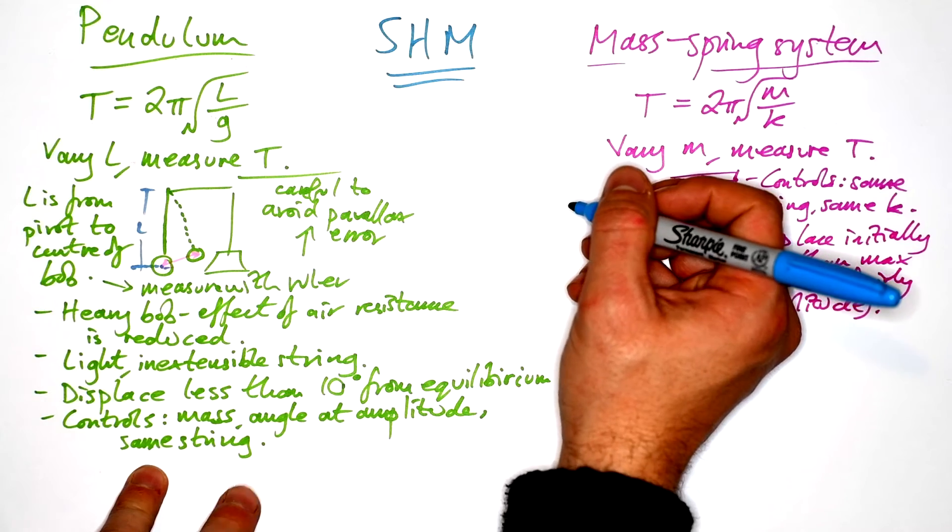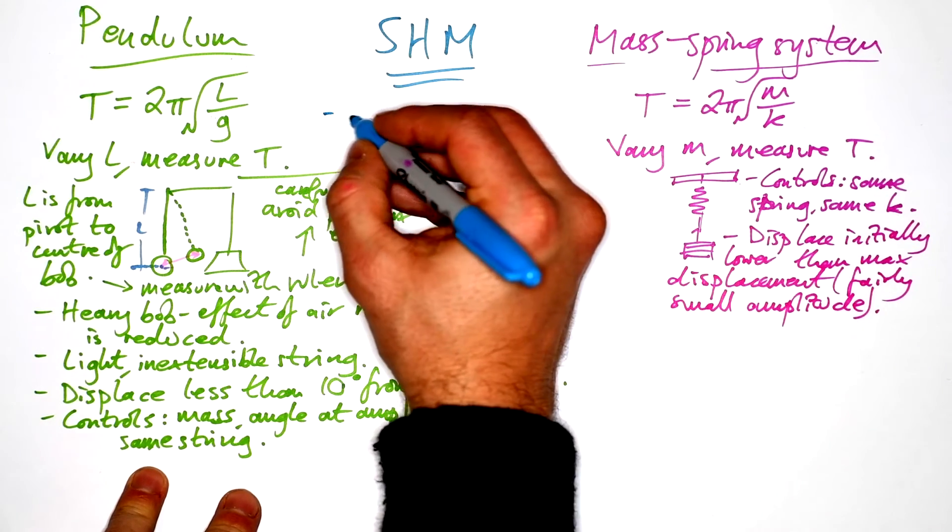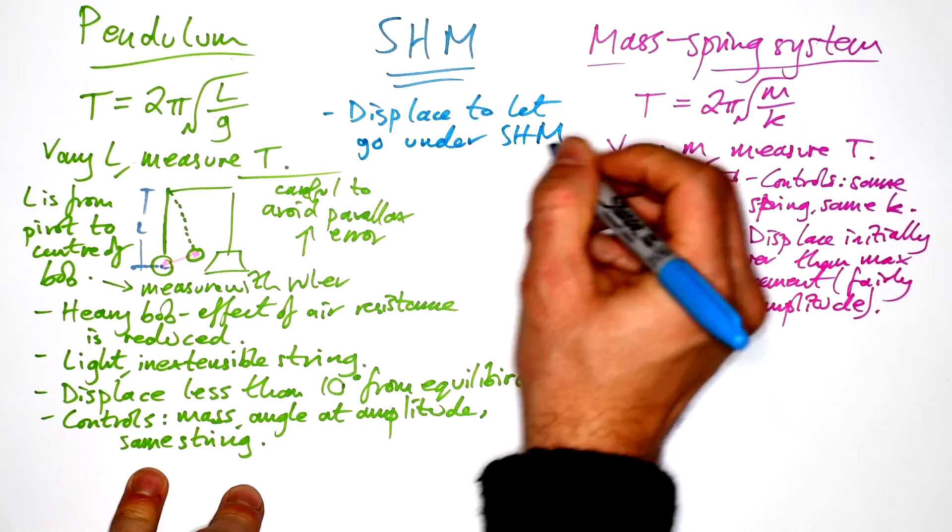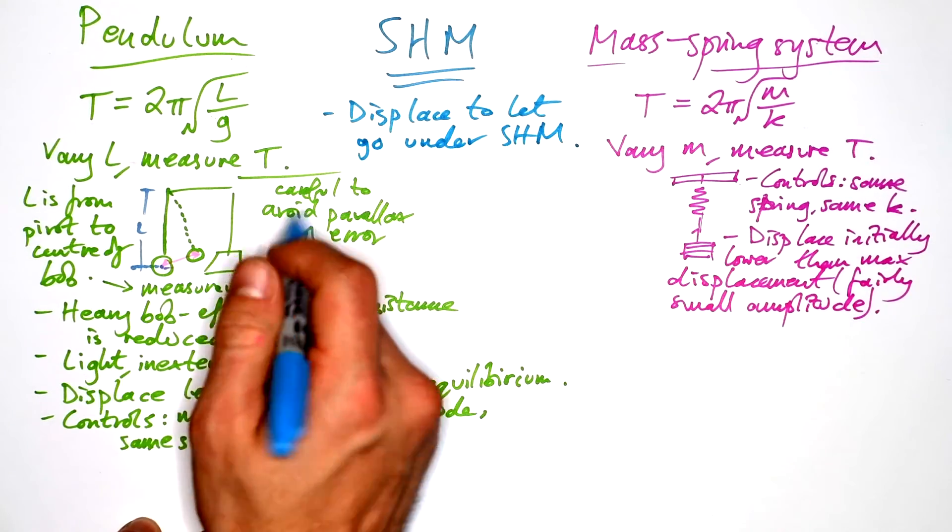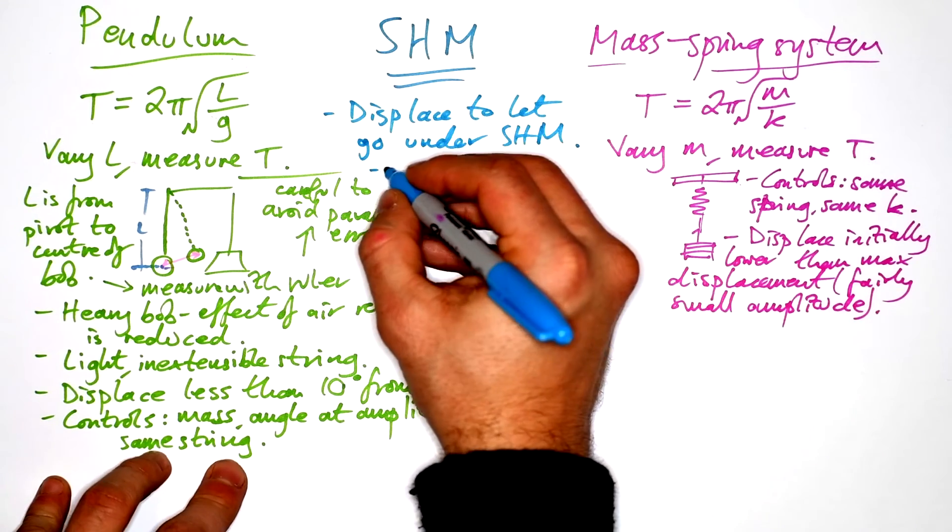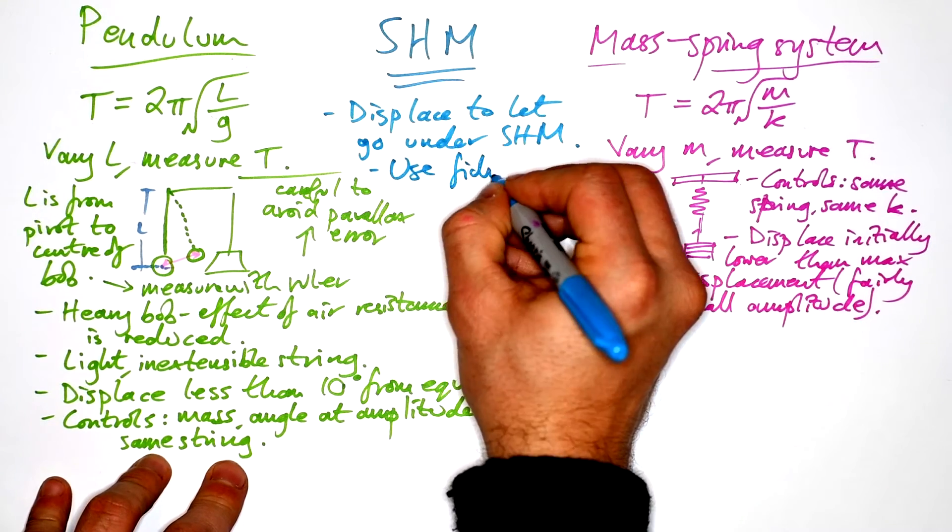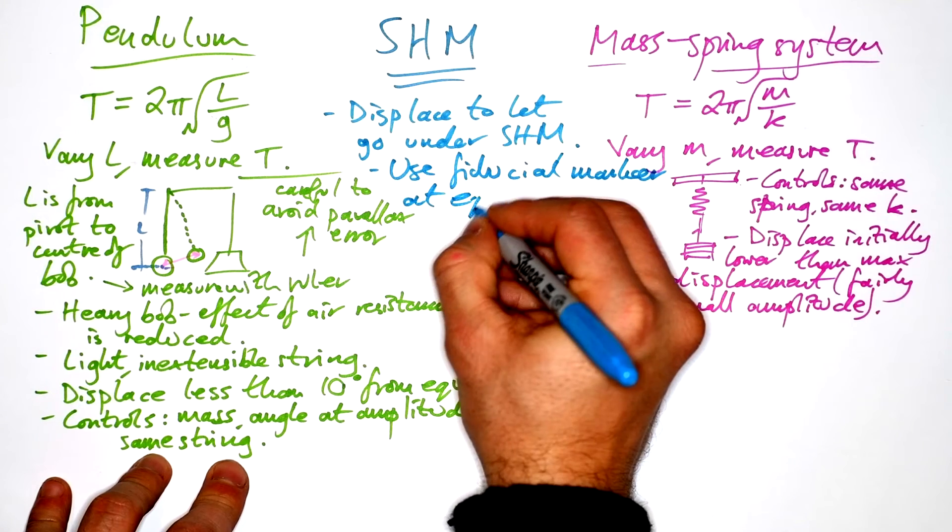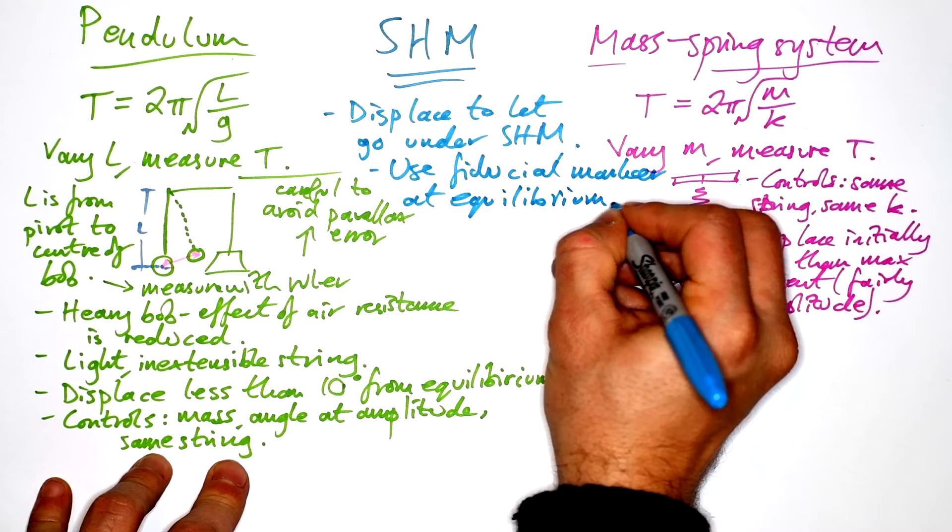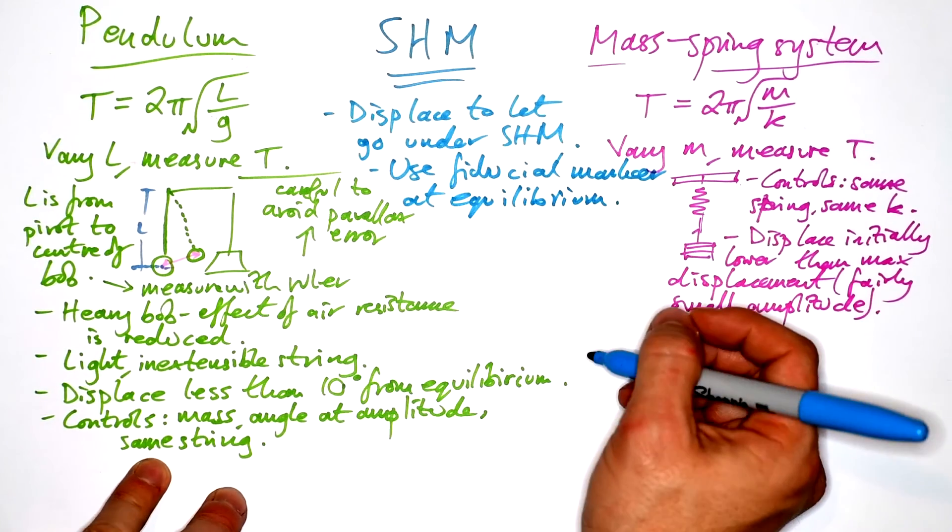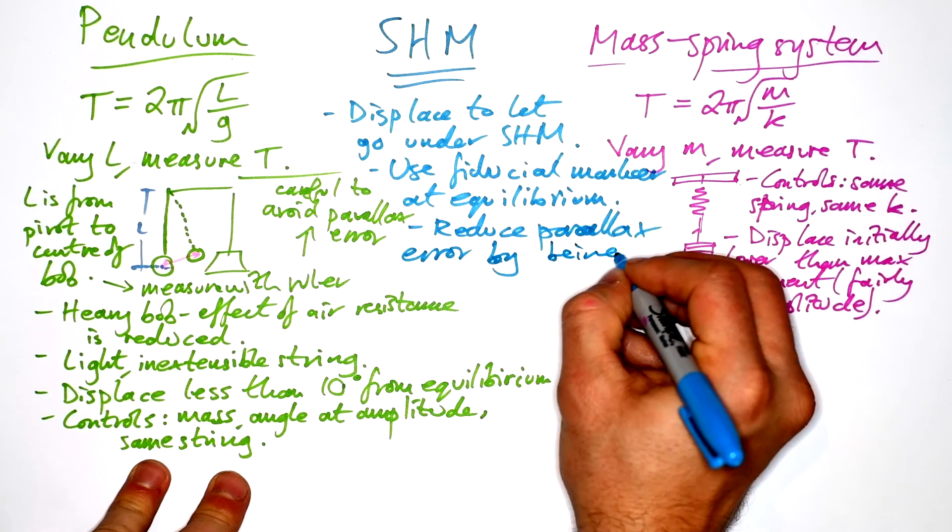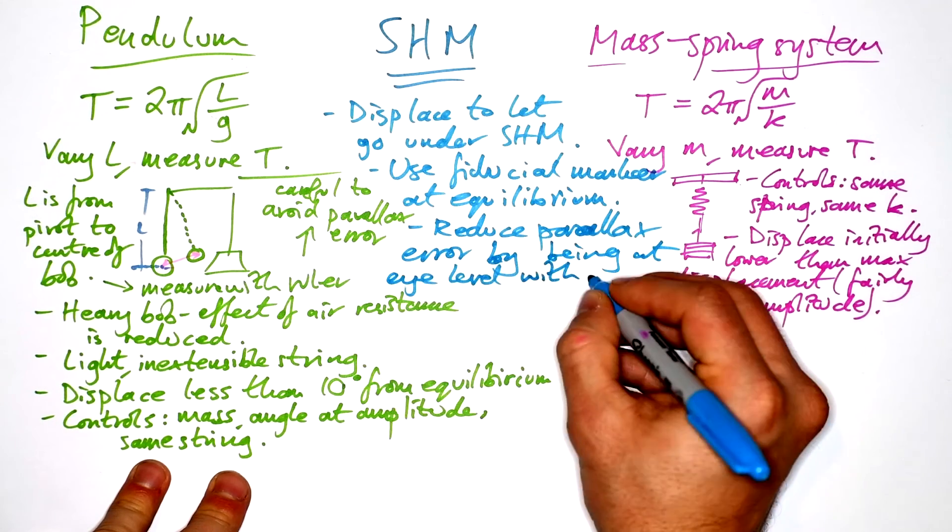So what's going to be common for both of these? Well, we're going to displace to let go under SHM. In other words, we just want to set them going. We want the pendulum to start swinging. We want the mass to start going up and down. We want to use a fiducial marker. It could be a nail or something like that. So you can tell exactly where equilibrium is when the pendulum or the mass is moving. We want to reduce parallax error by being at eye level with the marker.